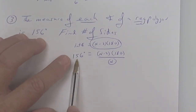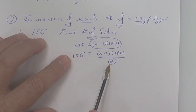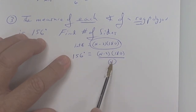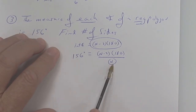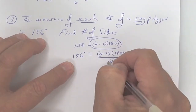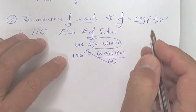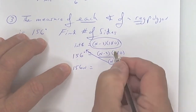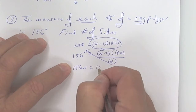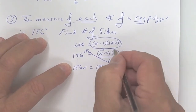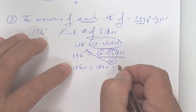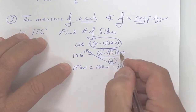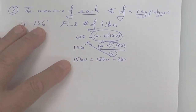So you have one angle on one side equal to one angle on the other side. Now cross-multiply — multiply by n — and you get 156n = (n - 2) × 180. Distribute: that's 180n minus 360.